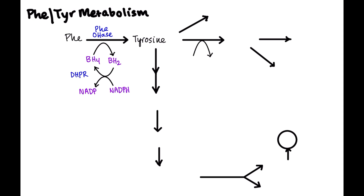Now we have tyrosine. One thing tyrosine is used for is to make thyroglobulins, which is important for thyroid hormone production. When making thyroid hormone, you have monoiodotyrosine (MIT) and diiodotyrosine (DIT). An MIT and a DIT combine to give T3, and two DITs give T4. So tyrosine is essential for thyroid hormone synthesis.